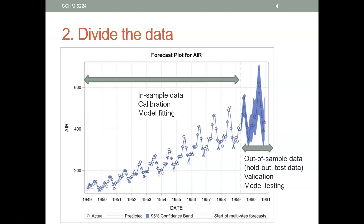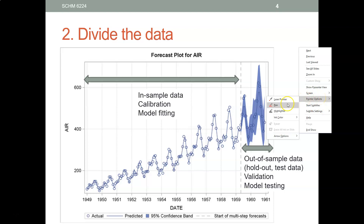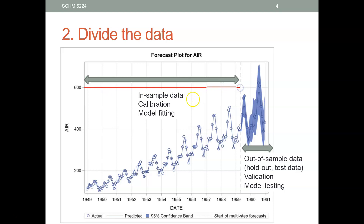Once you have downloaded the data, you're going to split the data into two parts. The first part of data will be called In Sample Data, and the second part will be Out of Sample Data. You're going to use the first part of the data to calibrate your model — in other words, to determine the best parameters for your model. In our previous assignments, I asked you to try different values for parameters and see which one gave you the best forecast quality.